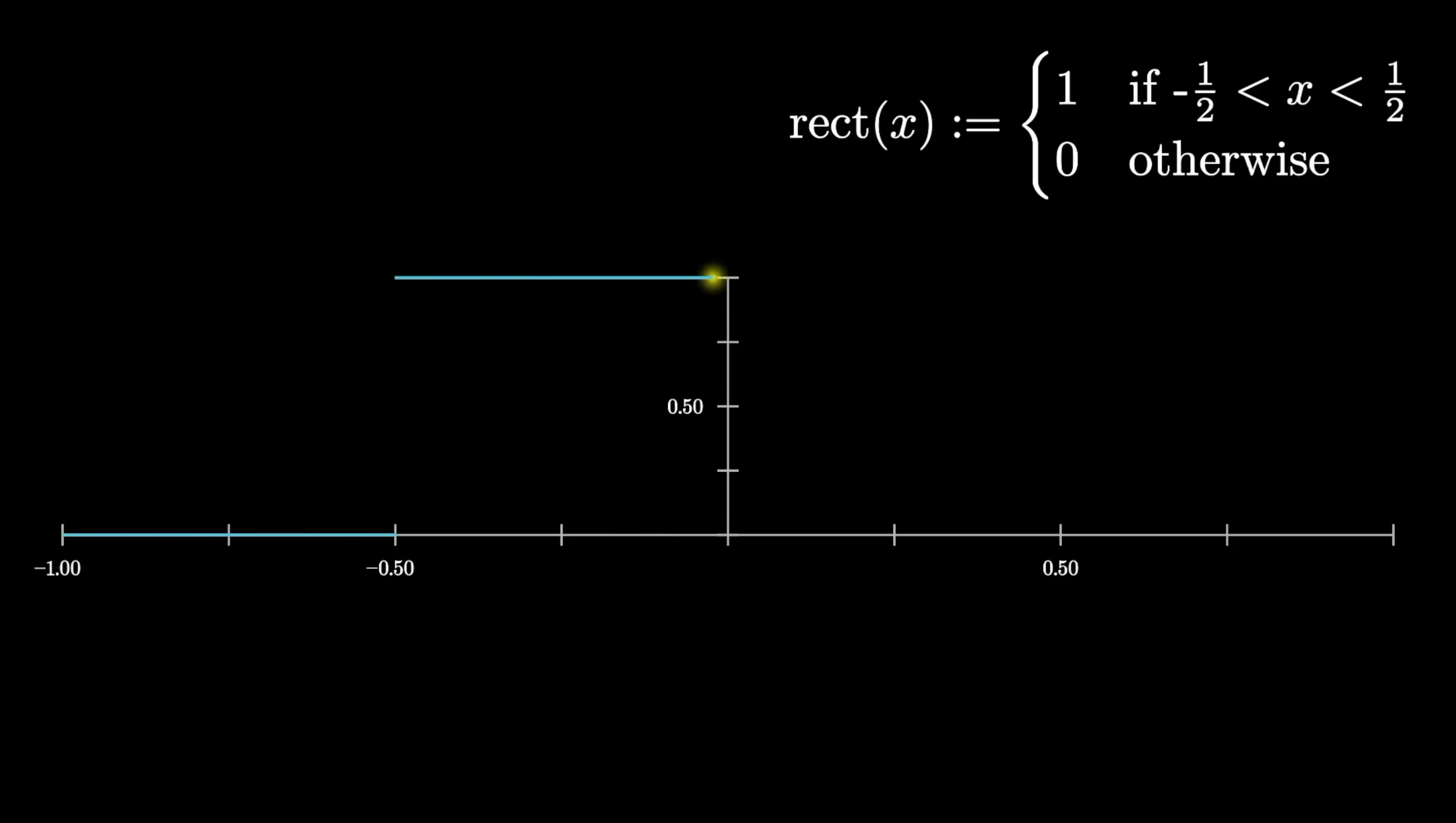So turning our attention to what seems completely different, consider a function that I'm going to be calling rect of x, which is defined to equal 1 if the input is between negative 1 half and 1 half, and otherwise it's equal to 0. So the function is this boring step, basically.